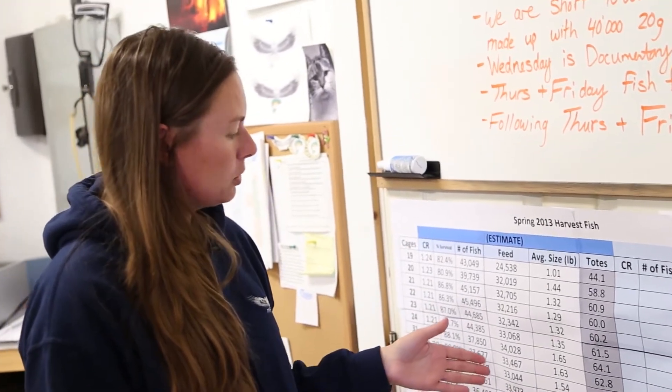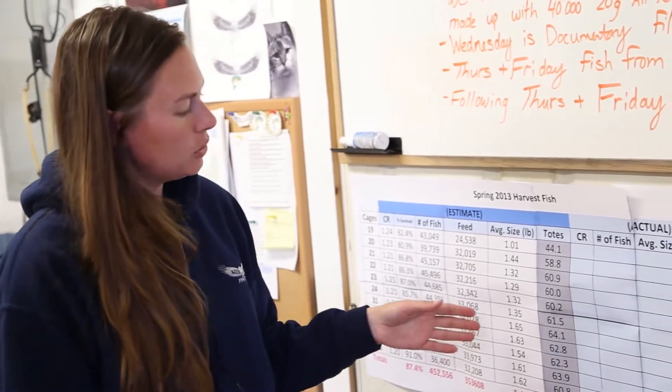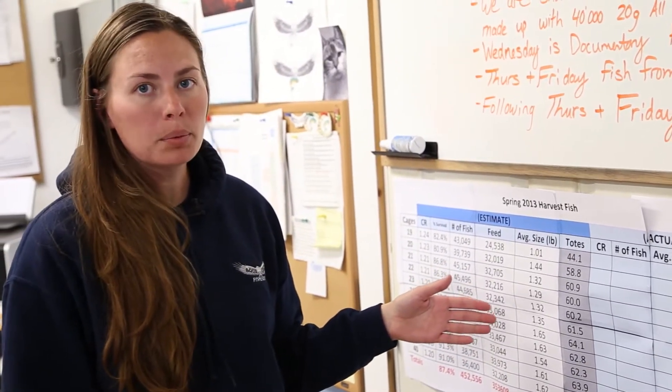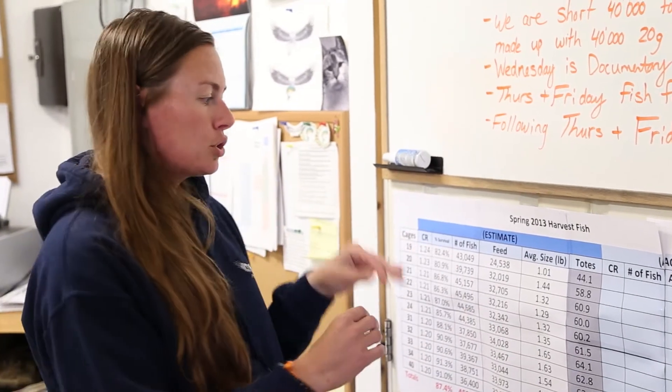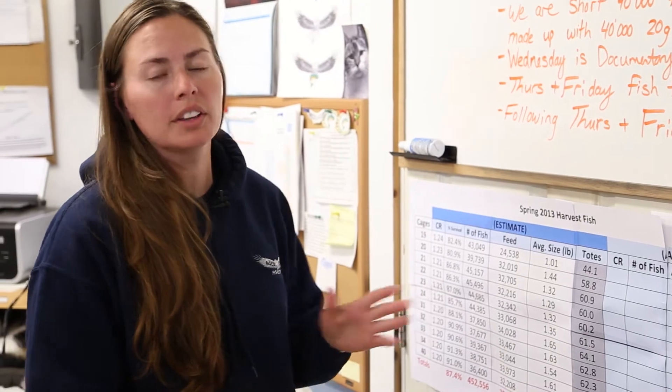Feed per cage, we're measuring that. Approximate average size, we can do that using a model that a university professor came up with that monitors fish growth through different temperatures because fish grow differently in warmer water than they do in cooler water.